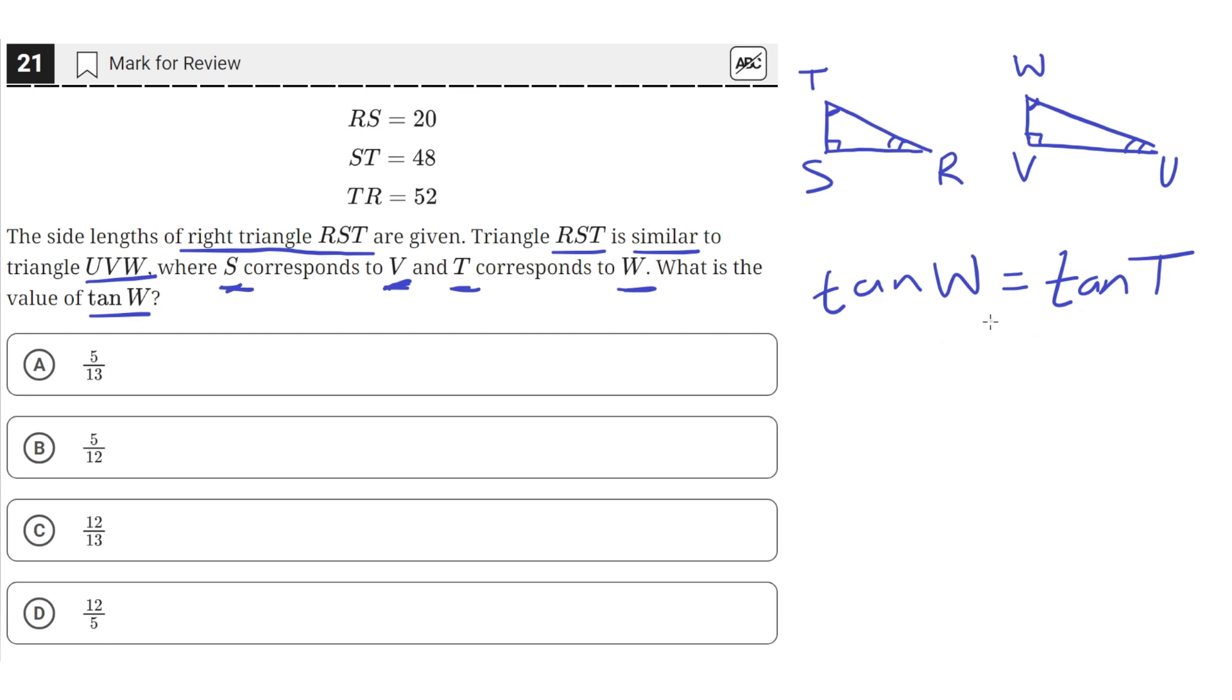So if we can just find the tangent of T, that will be equal to the tangent of W, since W and T are the same angle.